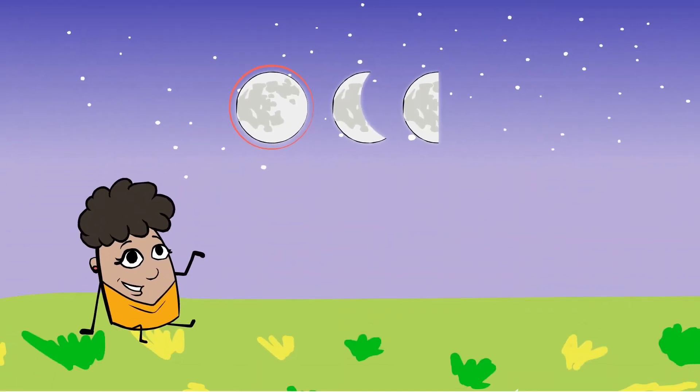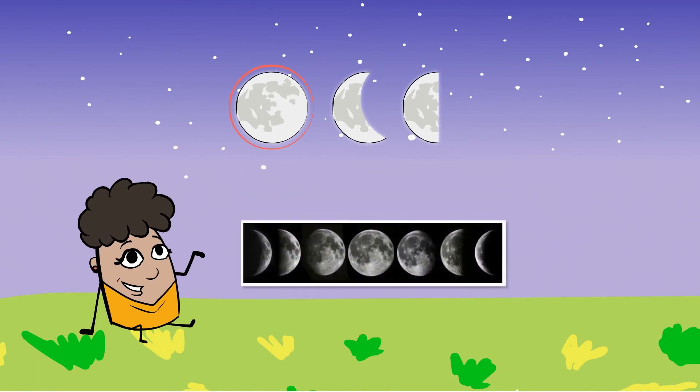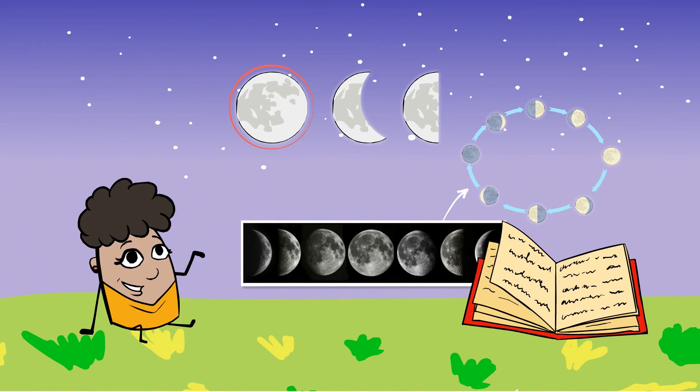You can follow this pattern by going outside every night and observing the moon's shape. Night after night, you'll be able to see the changes in the parts of the moon that are lit up by the sun. You can even keep a moon journal to record your drawings.